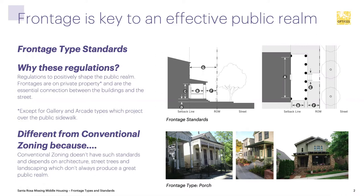Here are some examples of frontage regulations from a form-based code. You can see the top left example shows a porch in a cross-section view. There are requirements for how close it can be to the sidewalk, how deep it needs to be, what the overall distance is for that element to work well on the front or side of buildings, how tall it needs to be, and how far it should be raised from the ground to provide good interaction and some separation for the occupants.